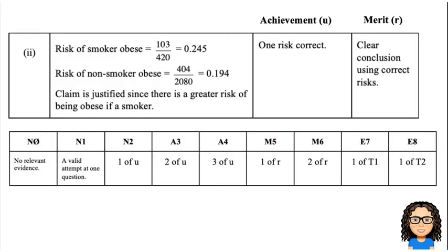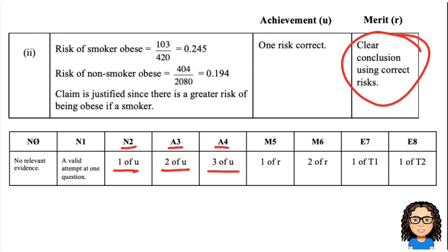If we look at the marking schedule, getting to a clear conclusion using correct risks gets you through to your R. Then you can tally up for the question. Overall through the whole of question 1: 1U gets you N2, 2U's A3, 3U's A4, 1R M5, 2R's M6, 1T E7, and 2T's E8. So add that all up and give yourself a mark for this question.